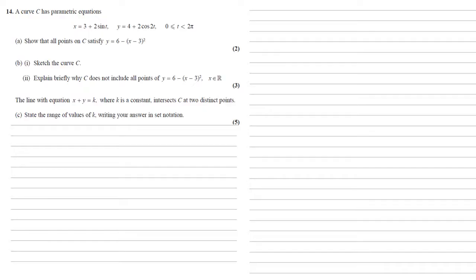So our curve C has the parametric equations x equals 3 plus 2 sin t and y equals 4 plus 2 cos 2t. Our first task is to show that all the points on C satisfy the equation y equals 6 minus the square of x minus 3.